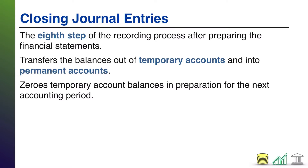What do we mean when we say temporary and permanent accounts? Temporary accounts are basically your income statement accounts — your revenues and your expenses. If you think about your income statement, it covers a period of time. When you get to the end of an accounting period, you need to report everything that happened during that period in the financial statements. But then you need to wipe the slate clean — you need a fresh start for a new income statement. That's what the closing journal entries do.